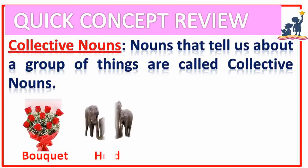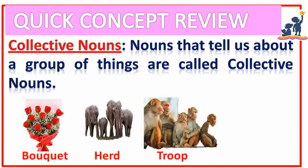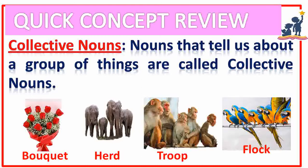Collective noun. Nouns that tell us about a group of things are called collective nouns. A group of flowers is called a bouquet. A group of elephants — herd. A group of monkeys — troop. A group of birds — flock.